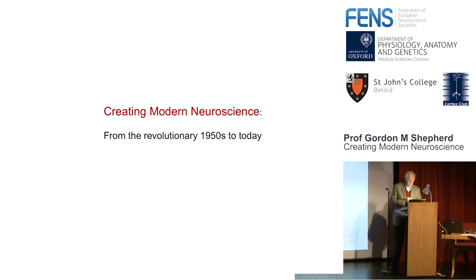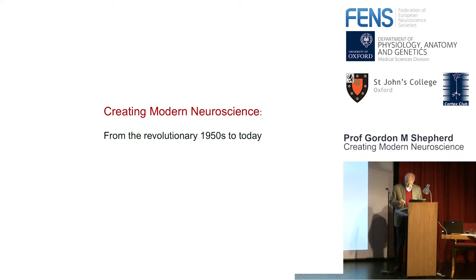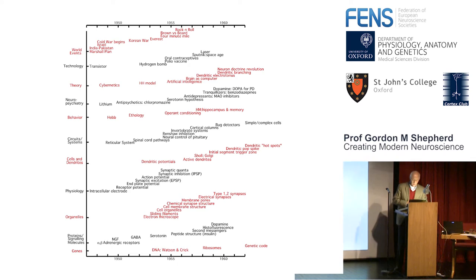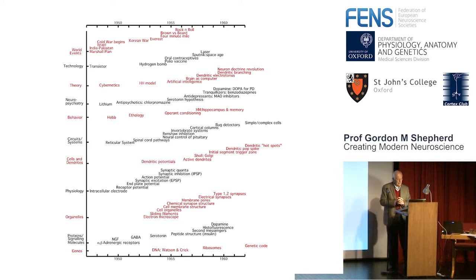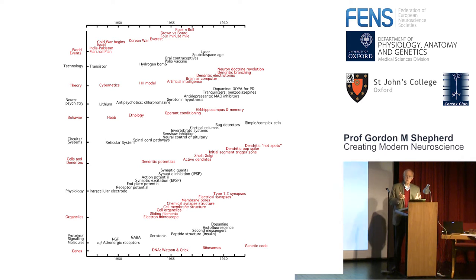The subtitle is 'From the Revolutionary 1950s to Today,' and this title is actually from a book I did recently. My initial interest in history was in the wonderful decade of the 1880s to 1890s, when the Neuron Doctrine was founded — by Cajal, by Golgi — which I helped to revive, along with a number of others, to give a sense of the richness of that time in identifying the neuron as the key basis for neurology and for what has become neuroscience.